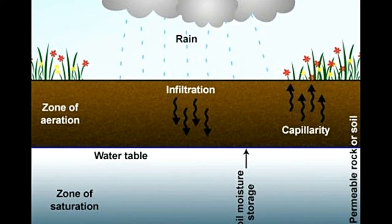In some cases, water from the water table is also able to rise into the aeration zone in a process known as capillarity. Capillarity results from the capillary action of the aeration layer, where water is able to climb against gravity from a wet particle to a dry one. In the zone of aeration, where water rises and is held against gravity, is known as the vadose zone, and the water in it is known as vadose water.